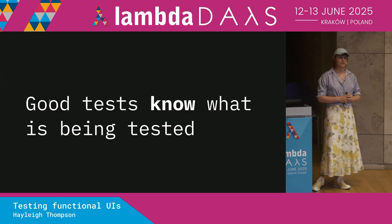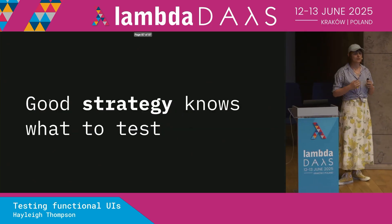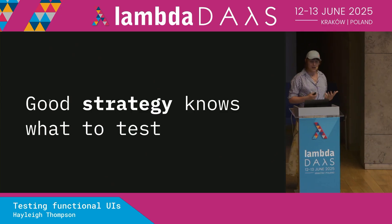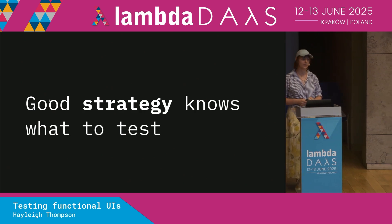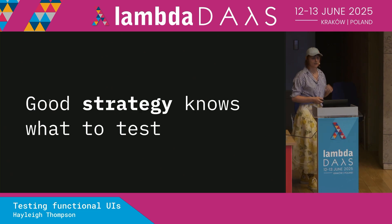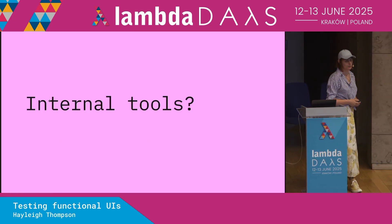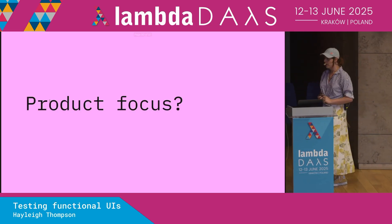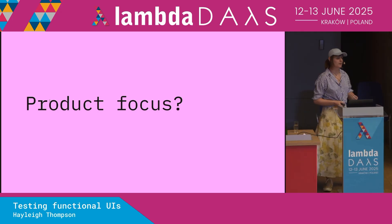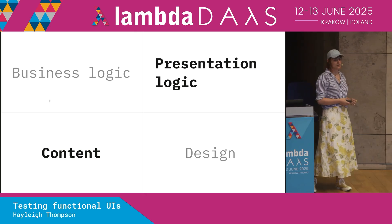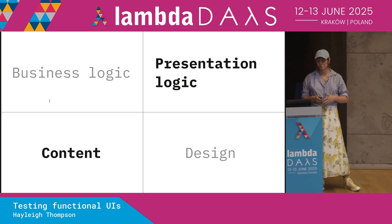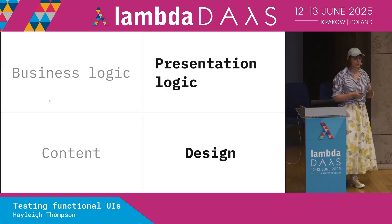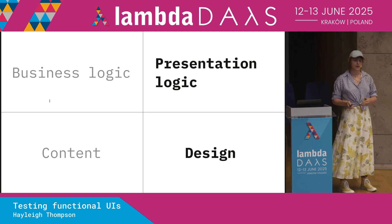Good tests know what is being tested. But a good test strategy knows what to test in the first place. Once you understand there are four different categories of tests, you can use that knowledge to shape what you actually test. Maybe you're only building an internal tool — then you probably only need to write business logic tests. Perhaps this sprint you're really focusing on product and customer experience — you can focus your tests on presentation logic and content. And another example: maybe you're building a design system. There's no business logic here — we're just going to write our tests focused on presentation logic and design, and lean into Storybook.